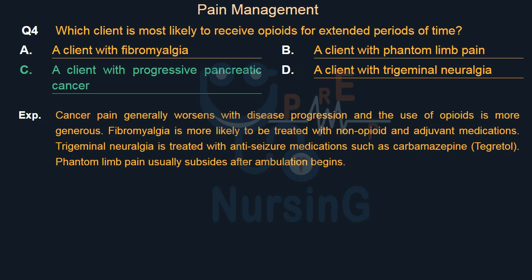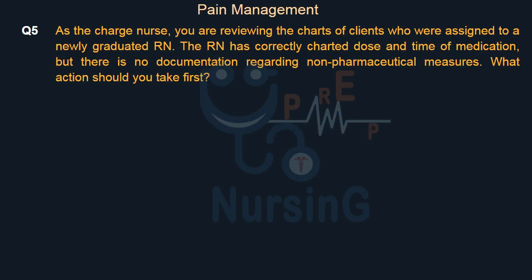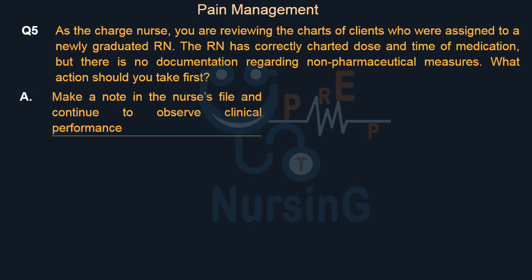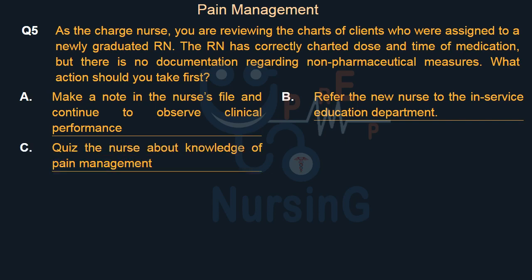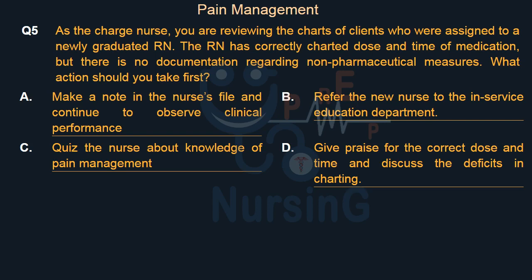As the charge nurse, you are reviewing the charts of clients assigned to a newly graduated RN. The RN has correctly charted dose and time of medication, but there is no documentation regarding non-pharmaceutical measures. What action should you take first? Option A: Make a note in the nurse's file and continue to observe clinical performance. Option B: Refer the new nurse to the in-service education department. Option C: Quiz the nurse about knowledge of pain management. Option D: Give praise for the correct dose and time and discuss the deficits in charting.